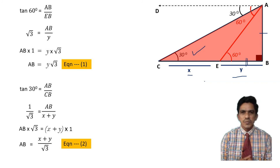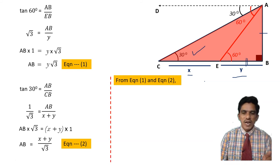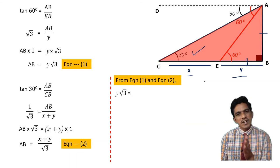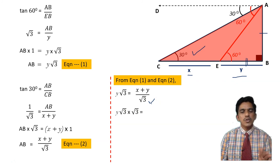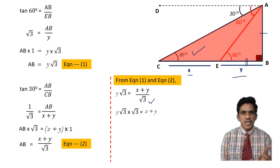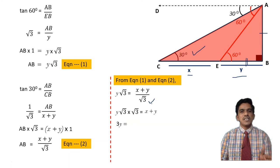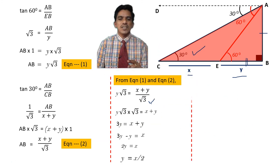Equations 1 and 2 have equal left-hand sides, so the right-hand sides are equal. Therefore Y root 3 equals (X plus Y) over root 3. Multiplying both sides by root 3: Y root 3 times root 3 equals X plus Y, giving 3Y equals X plus Y. Transposing: 3Y minus Y equals X, so 2Y equals X, meaning Y equals X over 2.